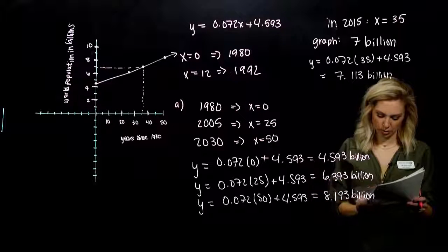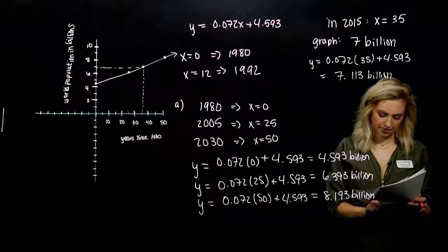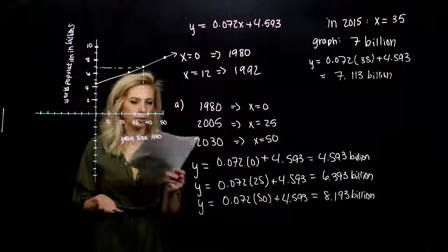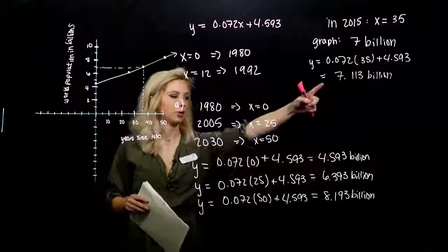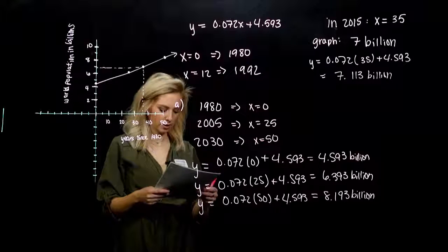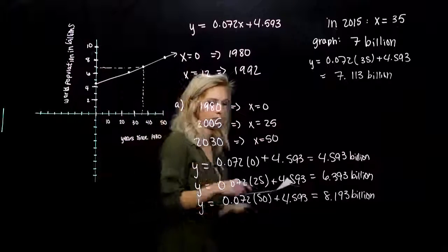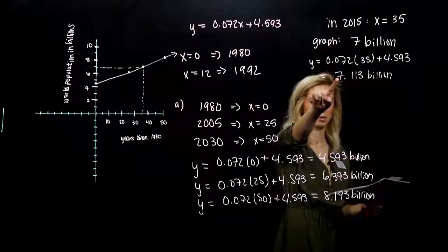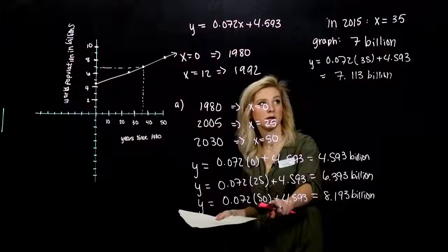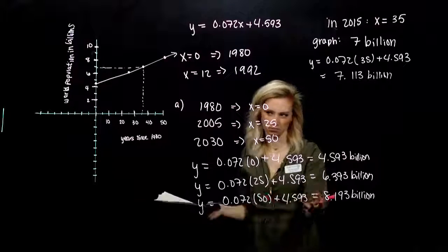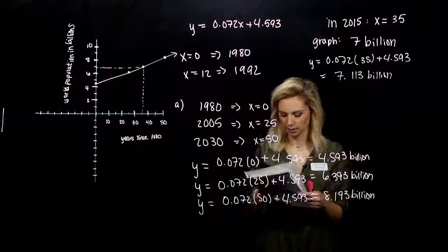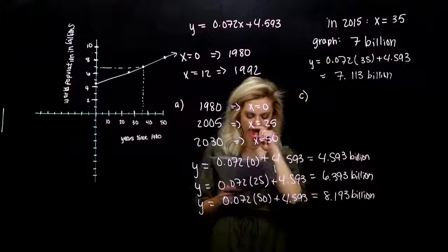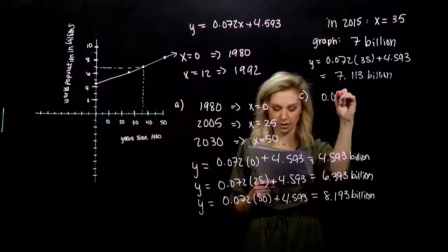Last, part C. In what year could we project the world population to be 7.761 billion? Just based off of our picture and what we've seen when we've plugged in different values for x, we know it's going to be somewhere in between what? After 35 years, but before 50 years, because I'm somewhere in between 7.113 and 8.193. So between 2015 and 2030. And we could look on the graph and get an even better estimation. But what part are we trying to solve for in this case? I need x. I need the number of years after 1980. And I have the population. When we plug it into our equation, x is now unknown.